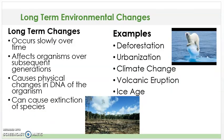Now we're going to discuss long-term environmental changes. Long-term changes occur slowly over time, hence the term long-term. It affects organisms over subsequent populations — not just the next generation, but several generations after. It causes physical changes in the DNA of the organism, and it can also cause extinction of species.